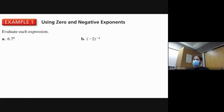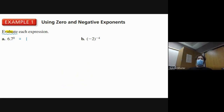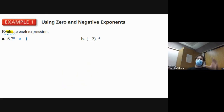Evaluate 6.7 to the zero power — anything to the zero power equals one, so that's the easiest one. Keep in mind: the key ingredient in the word 'evaluate' is 'value.' Evaluate means find the value, so your answer is a number. If it says solve, then X equals a number. If it says simplify, it'll be an expression.